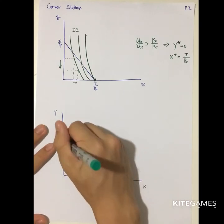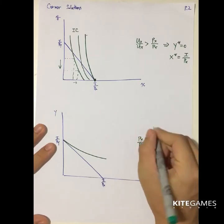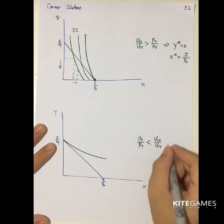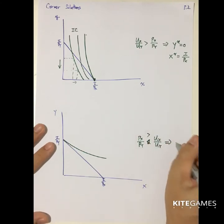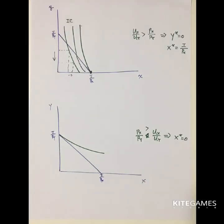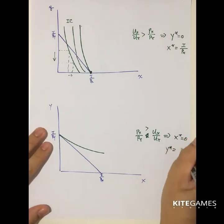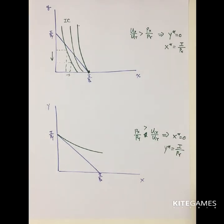The other case is that the indifference curve is very flat, meaning the slope of the budget line is less than the slope of the indifference curve. As a result, the consumer will not buy any good X, and all income goes to consuming good Y. So optimal Y equals I over PY. These two are special cases. Economists usually don't stress too much on corner solutions, but you just need to be aware that this possibility exists.